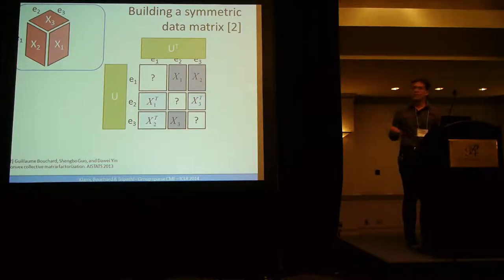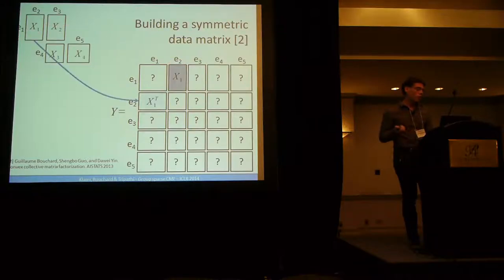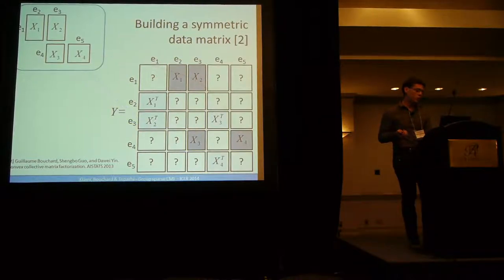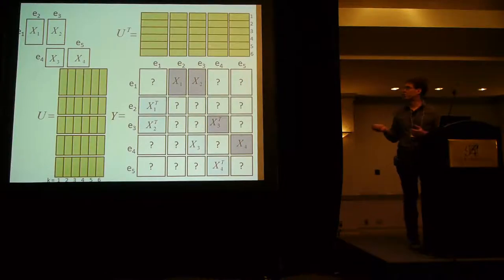So you can represent it as a low rank representation. And collective matrix factorization can be represented as simply factorizing this matrix. So for more general schema, you can also build such a matrix and have a low rank representation.